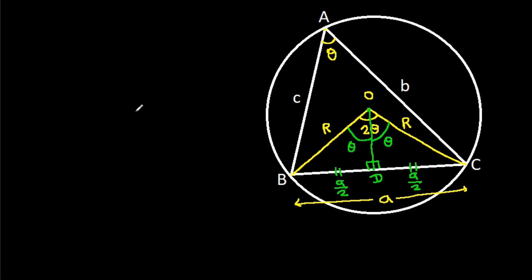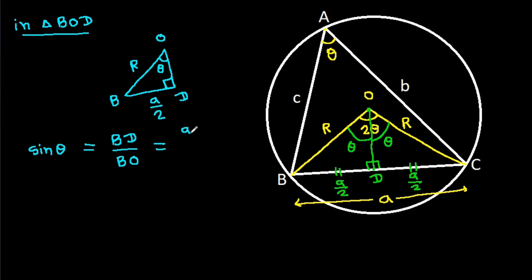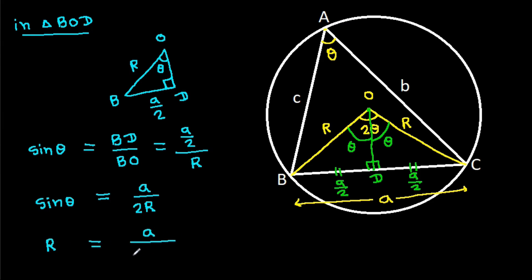Now in triangle BOD, BD is a divided by 2, BO is R, and the angle at D is 90 degrees and the angle BOD is theta. So sin theta equals (a/2) divided by R, which gives sin theta equals a divided by 2R. Therefore R equals a divided by 2 sin theta.